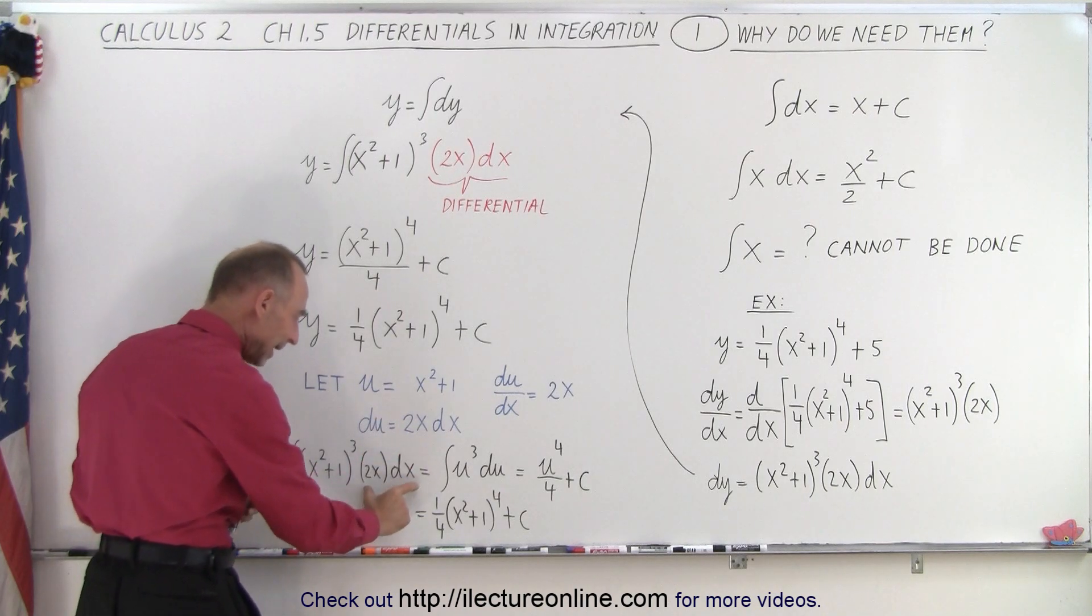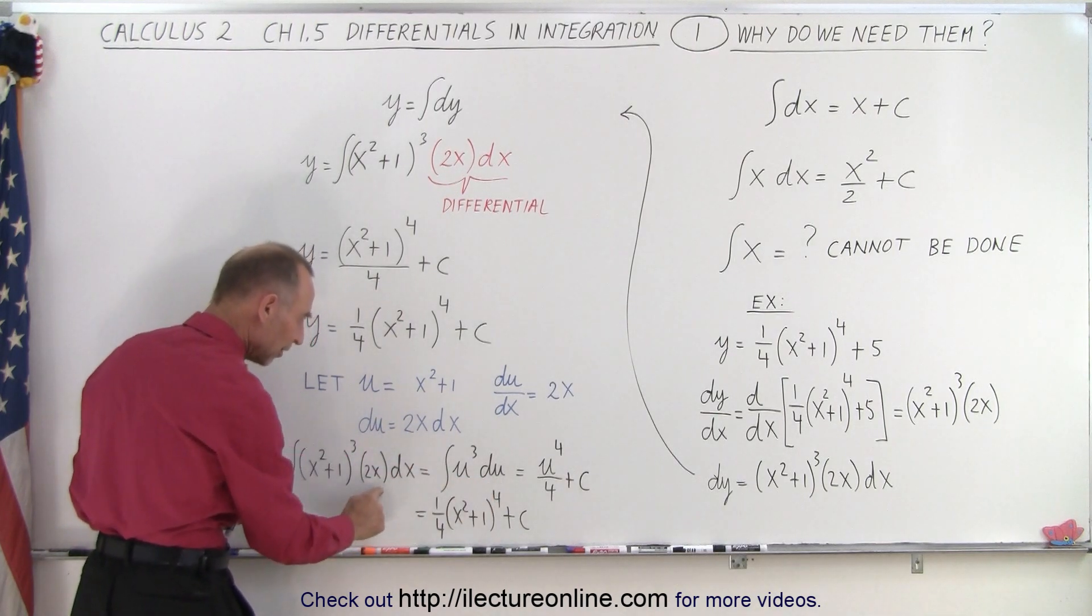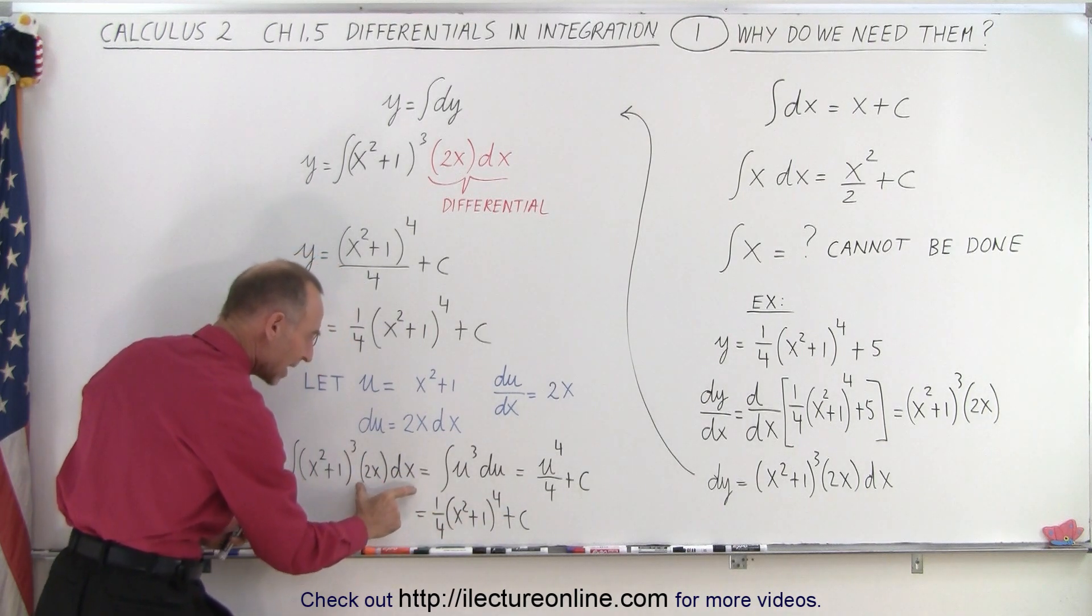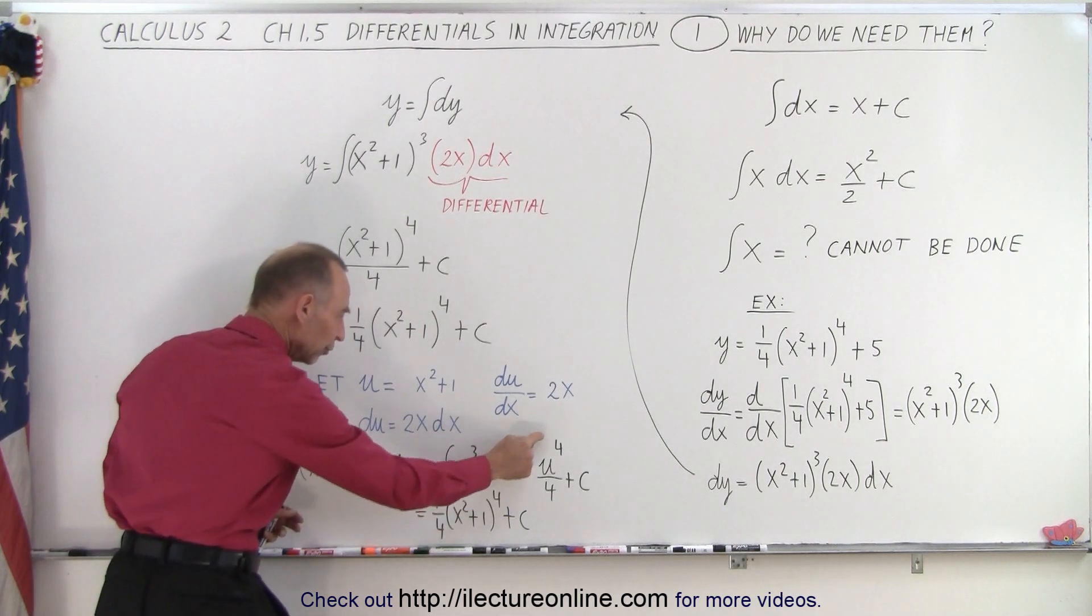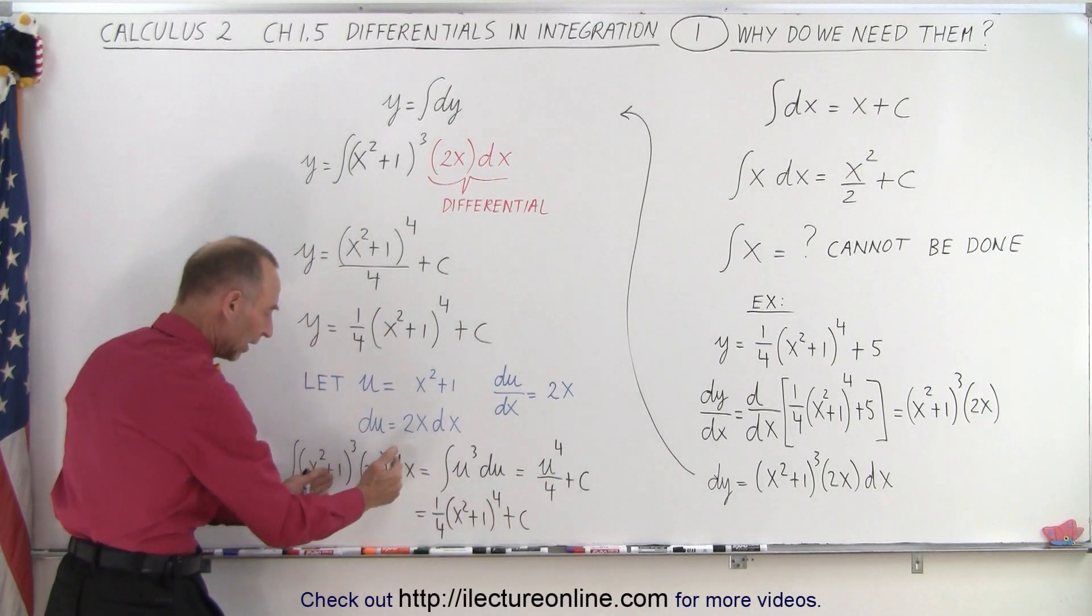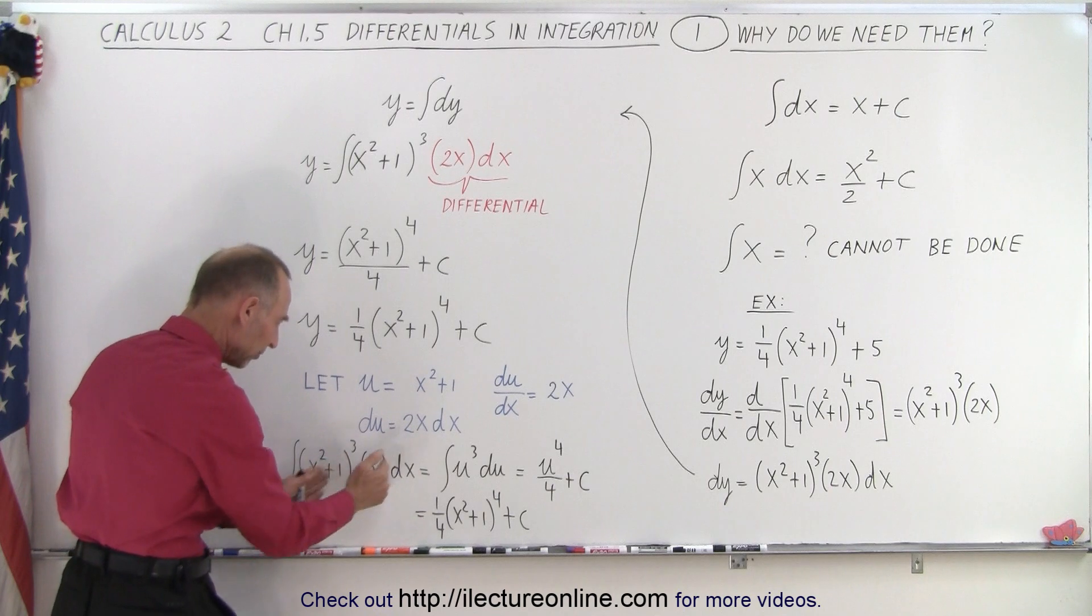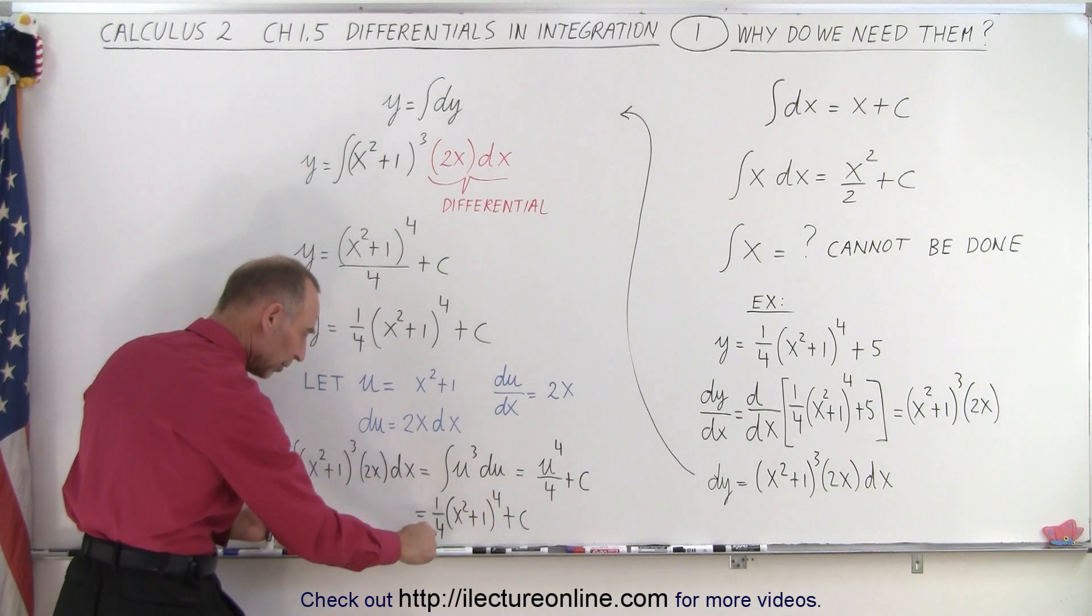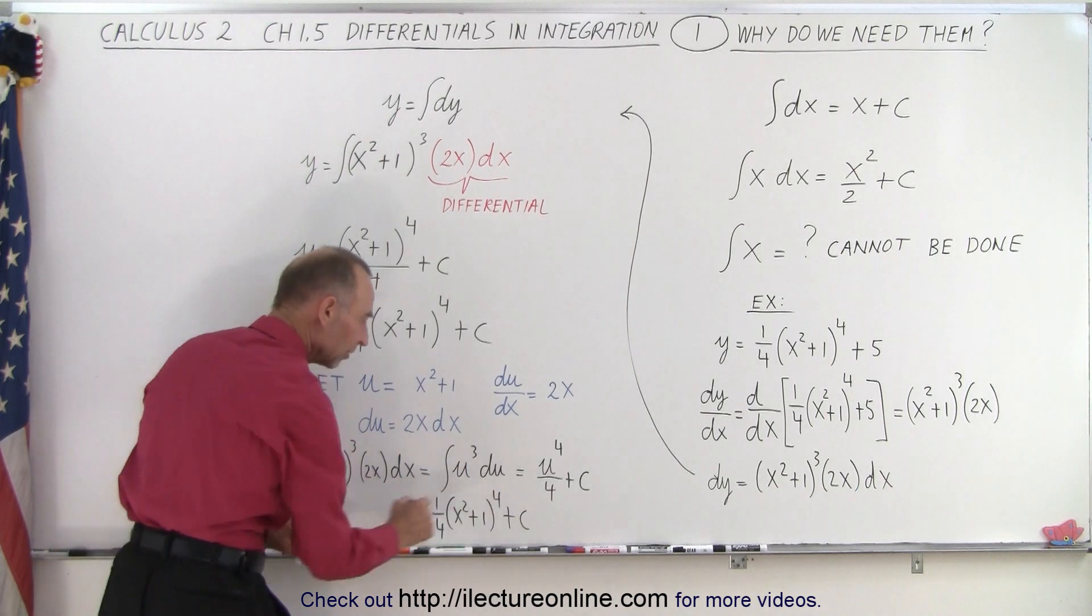And when I integrate, I need to have that du. I need to have that differential. So notice my du in this example is the 2x dx. So when I integrate, I get u to the fourth over 4 plus c, and the du drops off. That's your differential, and so when you integrate this, this drops off, and you're simply going to get, well, when I integrate, we get x squared plus 1 to the fourth power divided by the new exponent 4 plus a constant of integration.